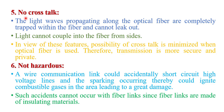Next, in optical fiber cable there is no crosstalk. The light waves propagating along the fiber are completely trapped within the fiber and cannot leak out. Light cannot couple into the fiber from the sides. Due to this feature, the possibility of crosstalk in optical fiber cable is minimum. Therefore, transmission is more secure and private in the case of optical fiber cable.